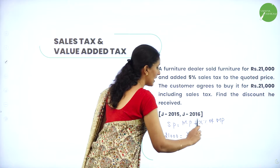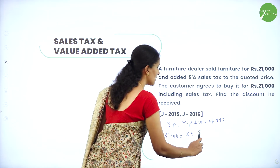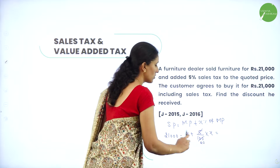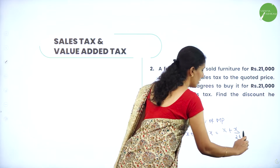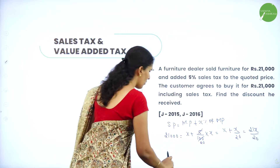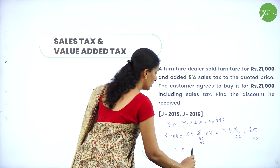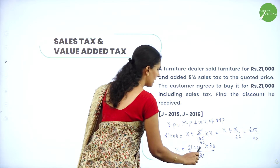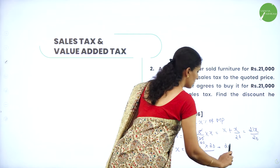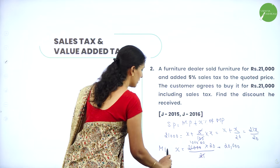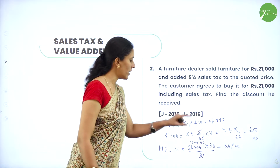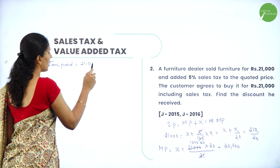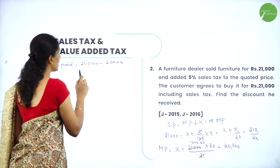Selling price equals market price plus x percent of market price. Selling price is 21,000. Let market price be x, and the tax rate is 5 percent, so 5 divided by 100 into x. Solving, we get the market price is rupees 20,000. Therefore, the extra amount paid by the customer as tax is 21,000 minus 20,000, which equals rupees 1,000.